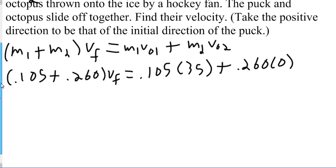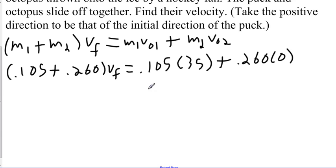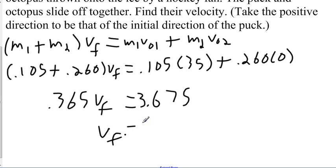And so when you start to work this out, you should get this is equal to 3.675. And this should be 0.105 plus 0.26, which equals 0.365. So 0.365 vf. So our vf is equal to 10.1 meters per second.